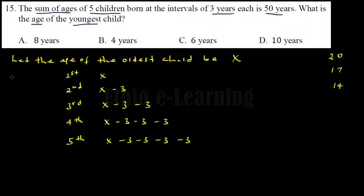This is the oldest child. This is the youngest child. We can see the youngest child's age is x minus 12.